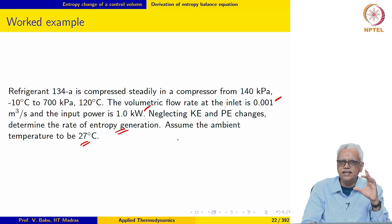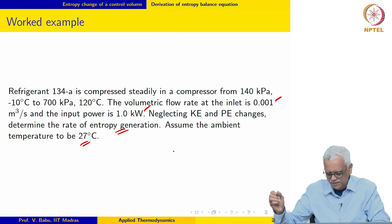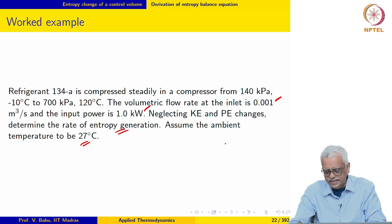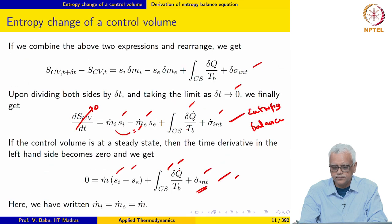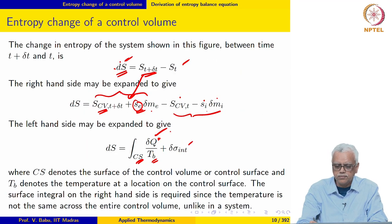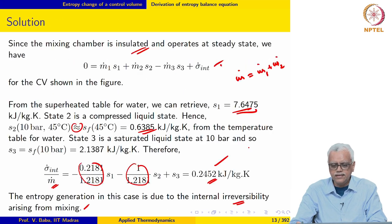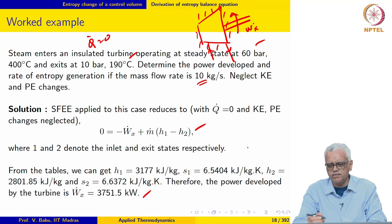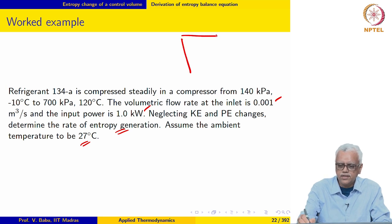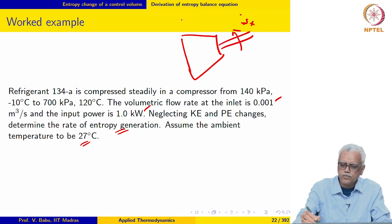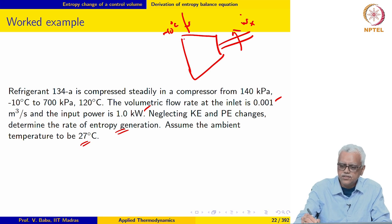This illustrates why an integral is required for calculating heat transfer in the case of just the device — the term ∫_CS (δq/T_b). For example, in this compressor the temperature at the inlet is −10°C, the exit temperature is 120°C, and the ambient is at 27°C. So there will be heat transfer from the ambient to the compressor where the fluid is below ambient temperature.